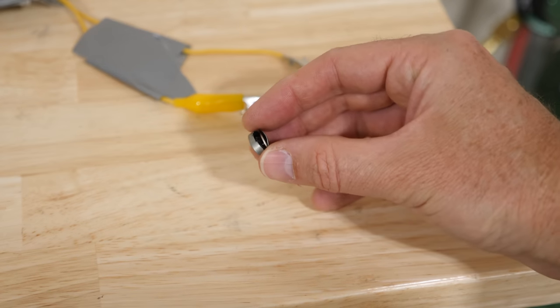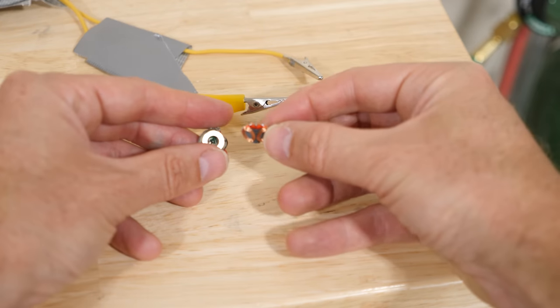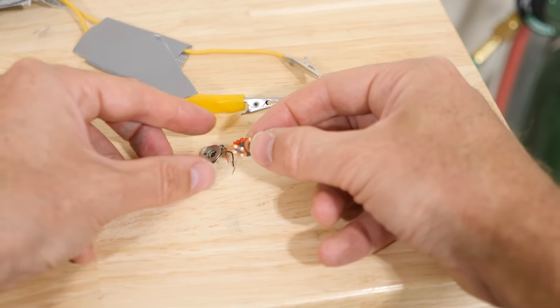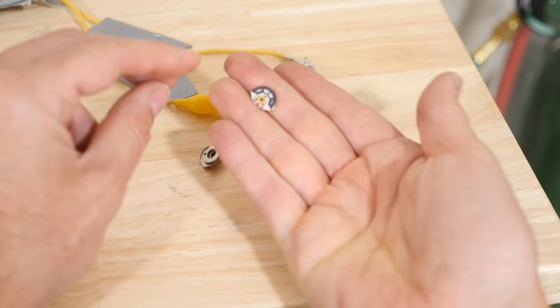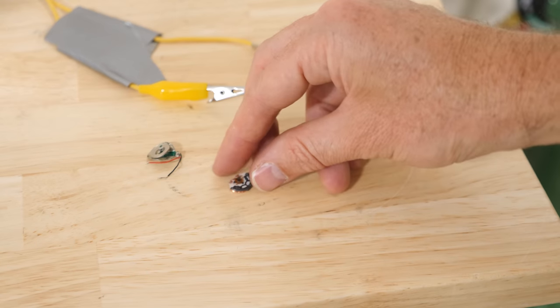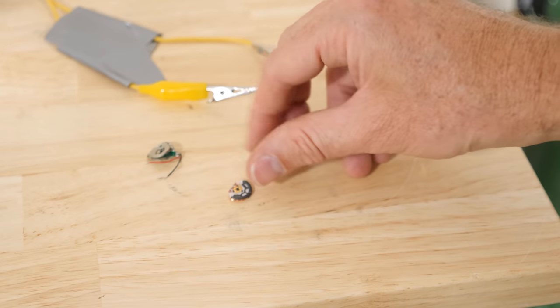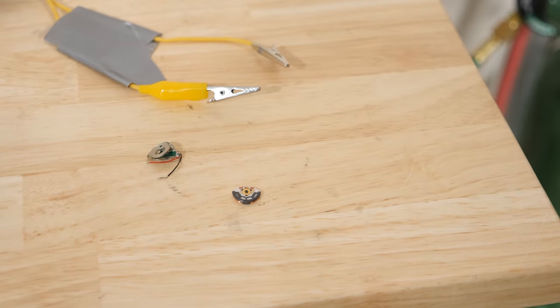If I start to break this open, we can see what's inside of this. What we have inside of here is just a little tiny electric motor, but it's weighted on only one side of it. So, as this spun around in a circle, it was uneven so it caused it to wiggle back and forth.